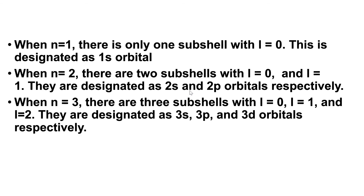When N=1, there is only one subshell with l=0, since l carries values from 0 to N minus 1, which gives 1 minus 1 equals 0. So l will be 0, and this is designated as the 1s orbital.